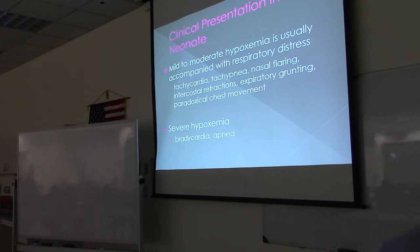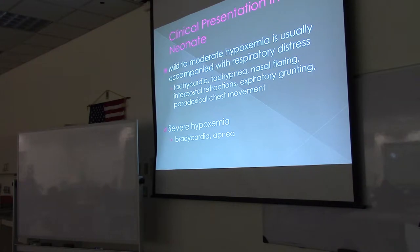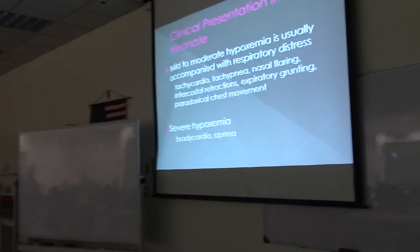Mild to moderate hypoxemia is usually accompanied with respiratory distress. Using the Silverman-Anderson score on a neonate to assess breathing, you would see nasal flaring, intercostal retractions, expiratory grunting, and paradoxical chest movement. Those are all signs of respiratory distress in the neonate.